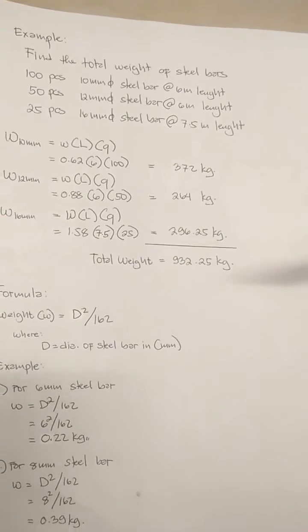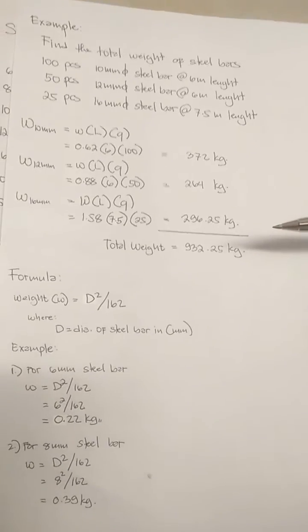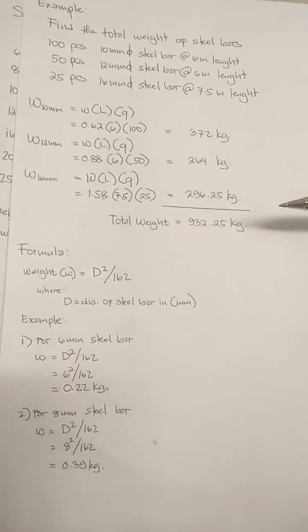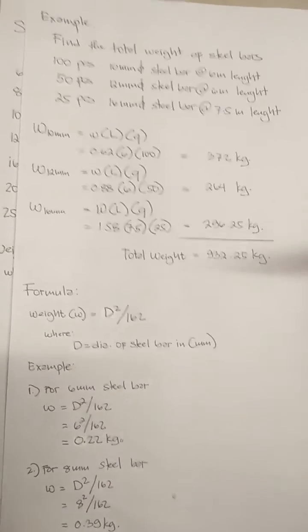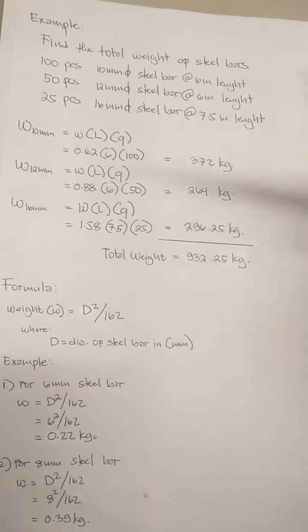Getting the sum of all steel bars, we will have a total weight of 932.25 kg. As you can see, it is very easy to compute the weight of the steel bar if we have these values.